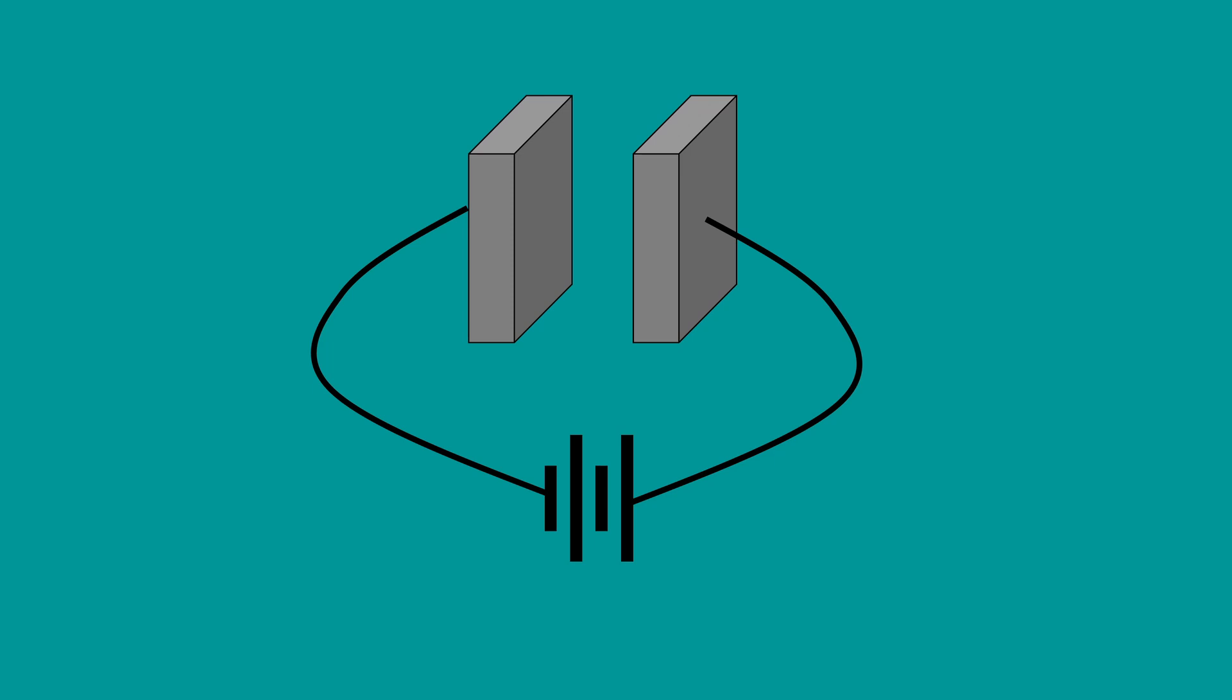We know that battery has a positive end and a negative end. Once the battery is connected, the negative charges on this plate are attracted towards the positive terminal of the battery. And from the negative terminal, negative charges are repelled.